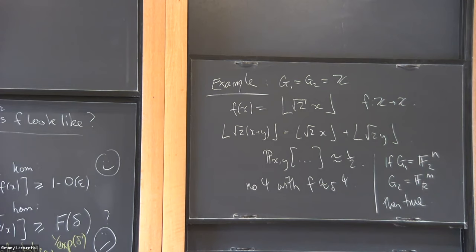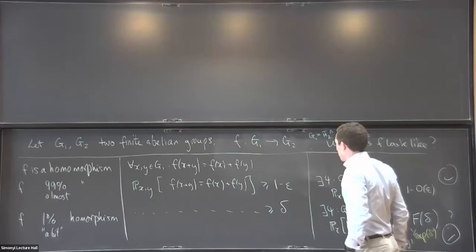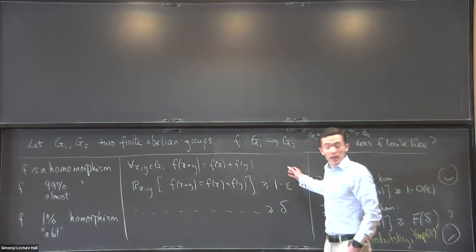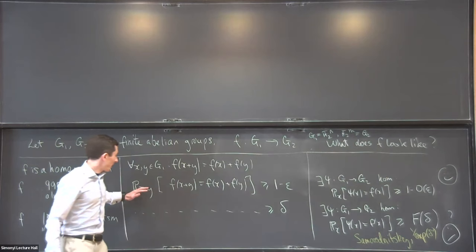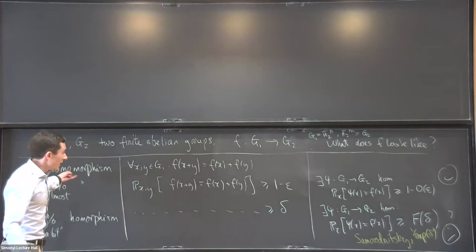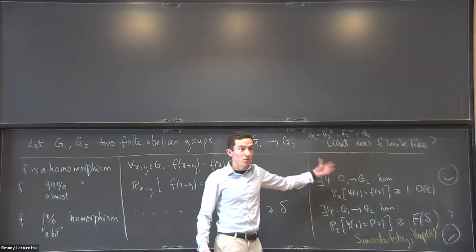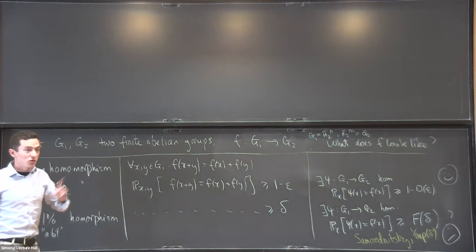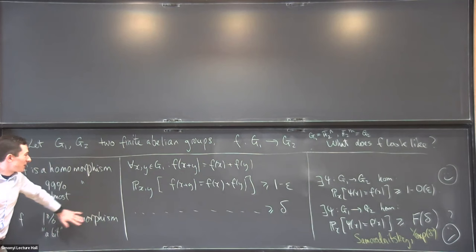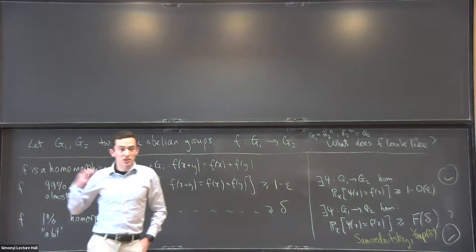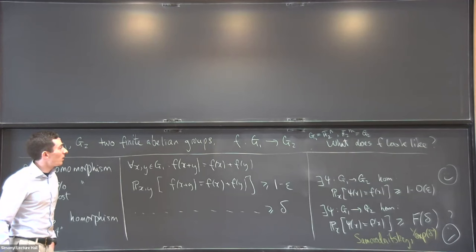I wanted to talk about this question — first of all I think it's a natural question to ask: what do 1% homomorphisms look like? As you all probably know better than I do, this has natural implications for property testing. If I give you a function f and ask whether it's a homomorphism, a natural thing is to pull x and y at random and see if the homomorphism condition holds. This middle statement says that if the test succeeds a lot of the time, you must have had a function that was almost linear to start with.